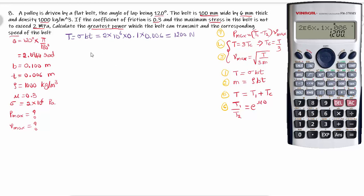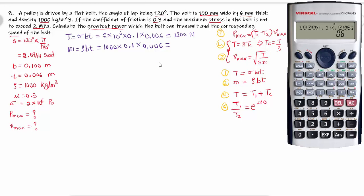Step 2: Calculate the mass per unit length. Mass m is equal to rho into b into t — density into width into thickness. Density value is 1000, into b = 0.1, into t = 0.006. That gives us 0.6 kg per meter length.